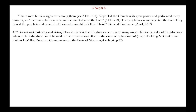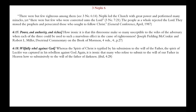Chapter 6, verse 15 — power and authority and riches. How ironic it is that this threesome makes so many susceptible to the wiles of the adversary when each of the three could be used to such marvelous effect in the cause of righteousness. Power, authority, and riches can be used for wickedness or can be used to further the cause of righteousness — how are we using them? Chapter 6, verse 18 — willful rebellion against God. Whereas the spirit of Christ is typified by his submission to the will of the Father, the spirit of Lucifer was captured in his rebellion against God. It is ironic that many who refuse to submit to the will of the Father in heaven submit so submissively to the will of the father of darkness. We are going to submit one way or another — either to the father of darkness, Satan, or we will humble ourselves and submit our wills to the will of the Father and the Son.